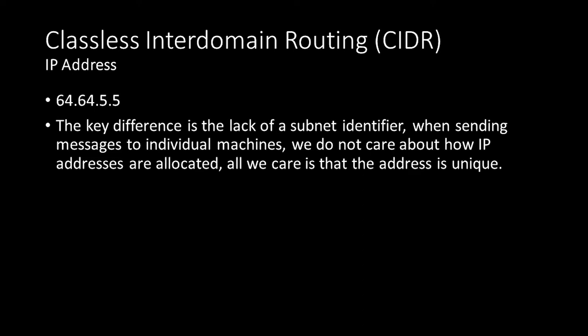CIDR fixes the allocation problem of classful domain routing. Networks looking to add more hosts could exchange their existing CIDR address for an available address with one bit shifted over. For example, a network could return its CIDR address 64.64.0.0/20 in exchange for 80.80.0.0/19. Because the network portion has been reduced by a single bit, this network can have twice as many hosts while ensuring all devices on the network share the same network prefix.